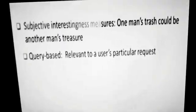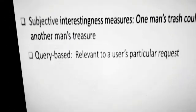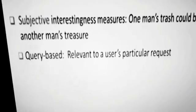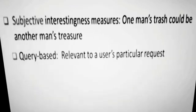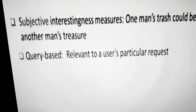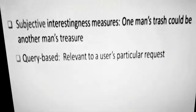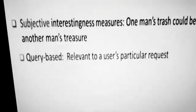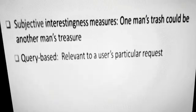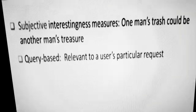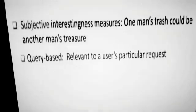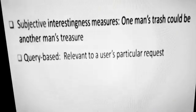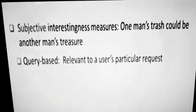The next measure we'll focus on is subjective interestingness, which depends on the person's interest. One person may generate one association rule, another person may generate a different one — my association rule may not be the same as someone else's. That is why this saying is important: one man's trash could be another man's treasure. It is totally subjective, depending on the person's area of interest.